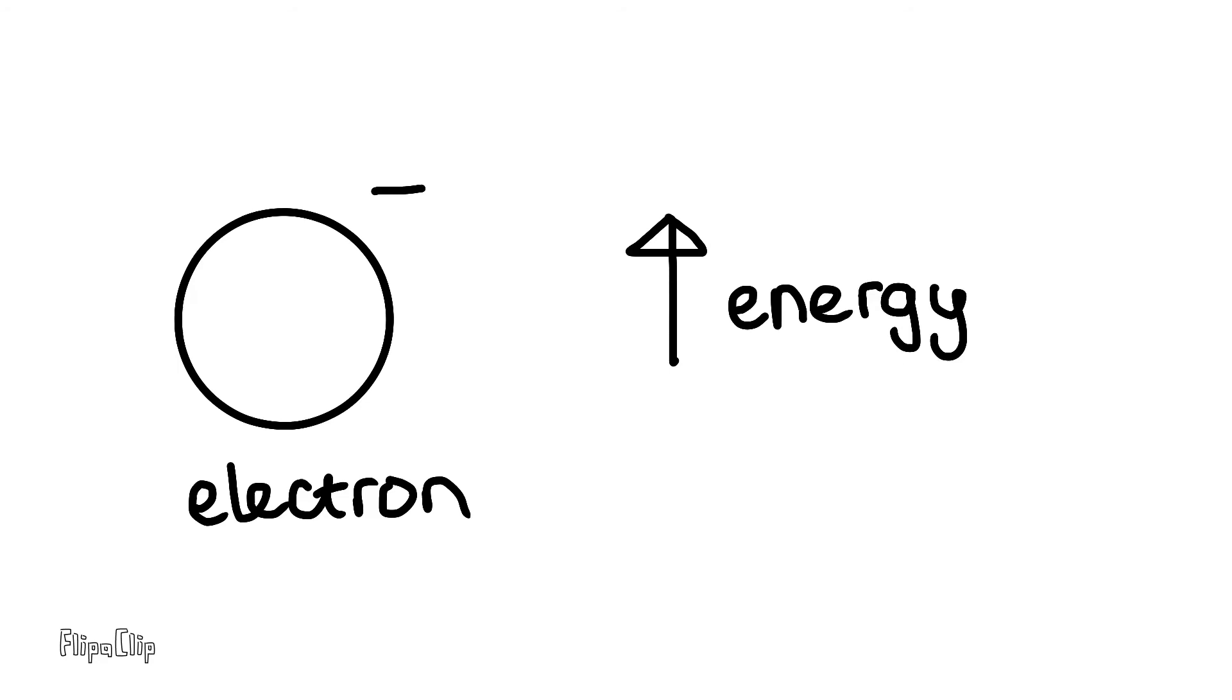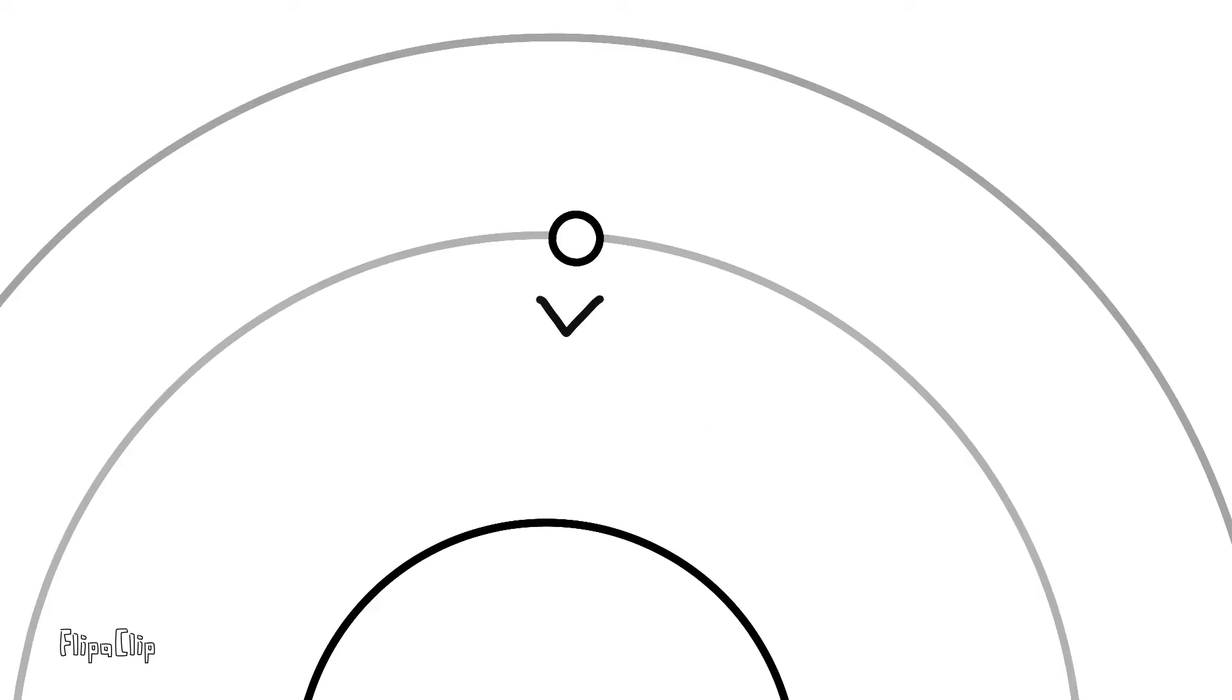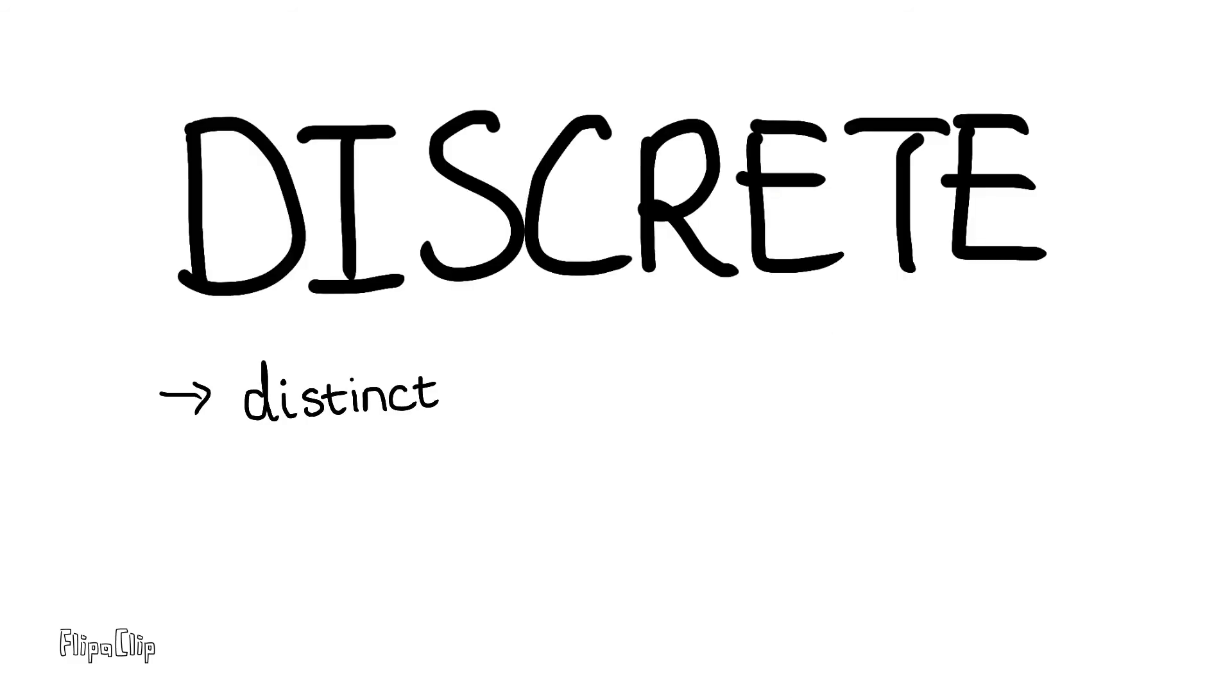An electron gets an energy boost, in this case from the thermal energy of the flame, and gets excited. Now that our electron has more energy, it can resist the electrostatic attraction of the protons in the nucleus, and quite literally jumps from its current energy level to a higher one. The reason for this jump is because the energy levels are discrete, meaning distinct, separate, or distinctly separate.